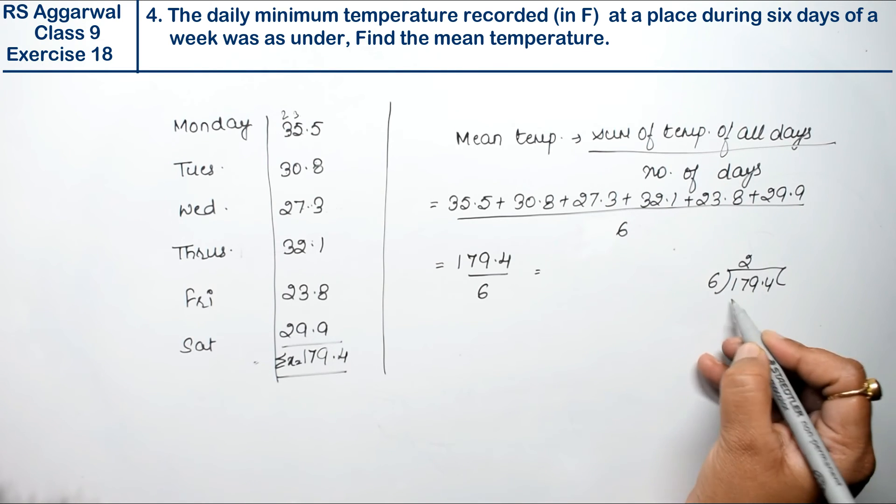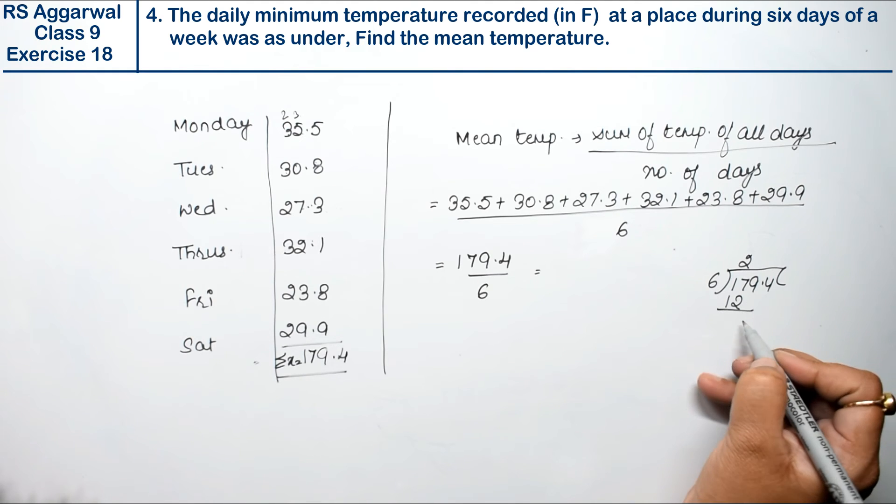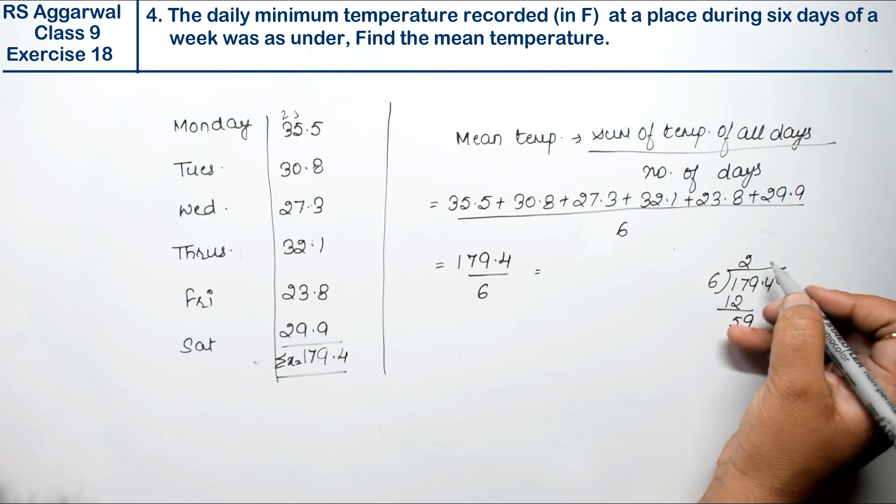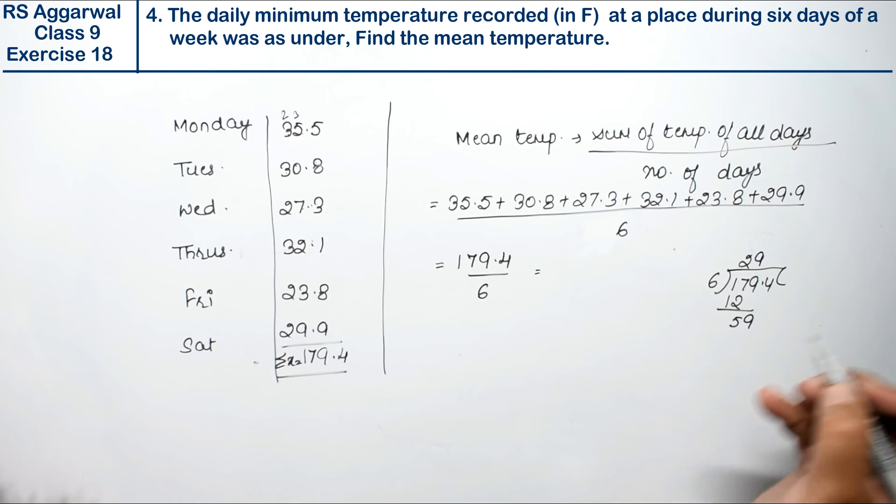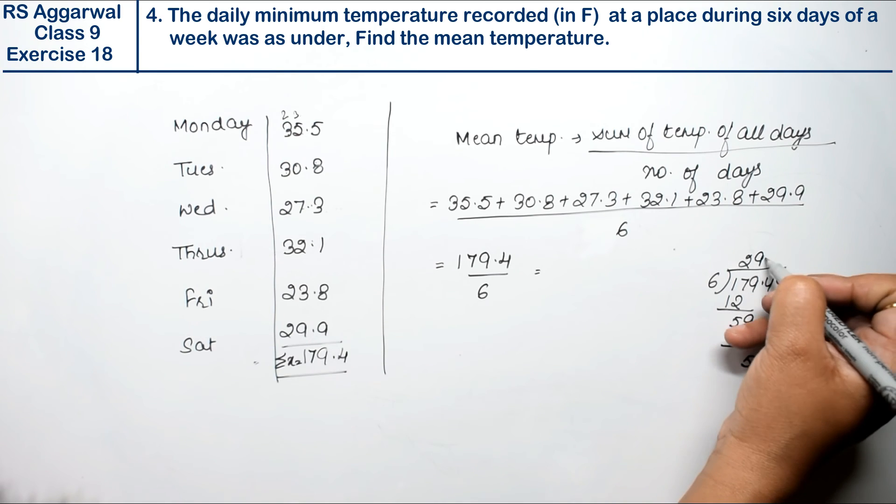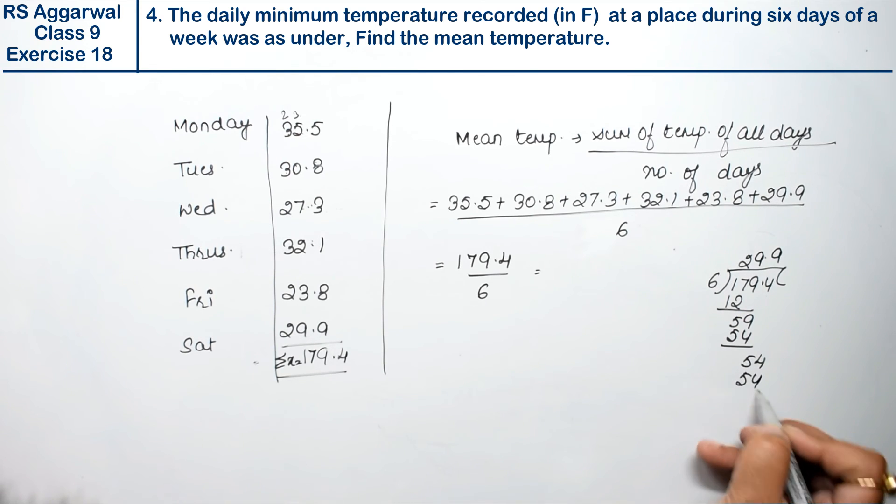Six twos are twelve, right? Toh yeh aaya five nine, six nines are fifty four. Fifty four utara point lag gya upar. Again nine is fifty four.